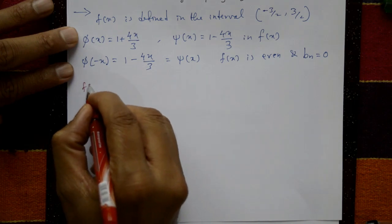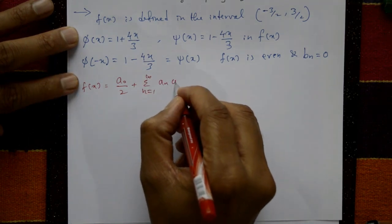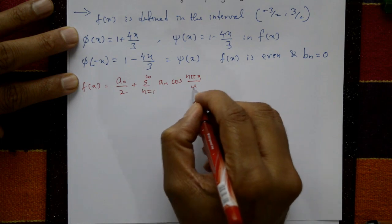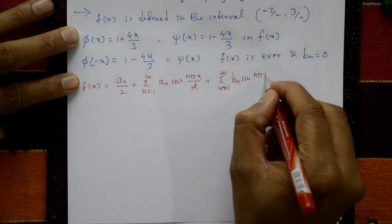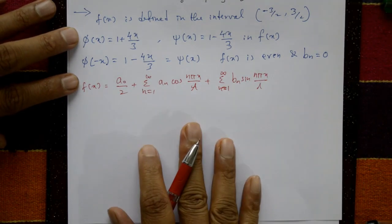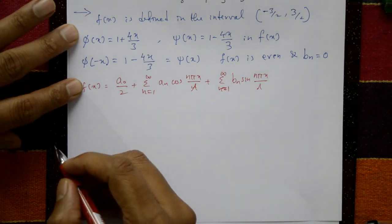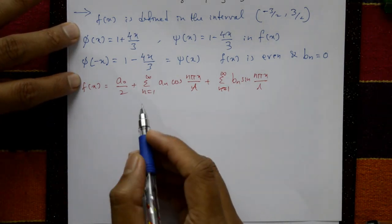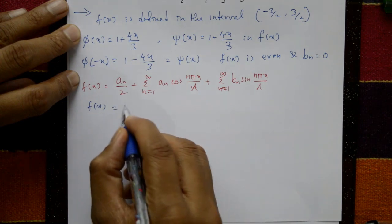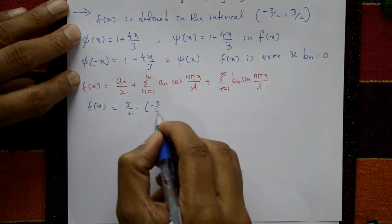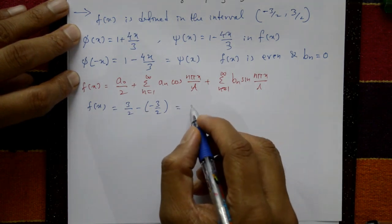For an even function, f(x) = a₀/2 + Σ aₙ cos(nπx/l) + Σ bₙ sin(nπx/l). The interval is -3/2 to +3/2. The period is b - a = 3/2 - (-3/2) = 3, so the full period 2l = 3.